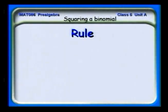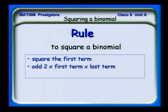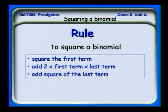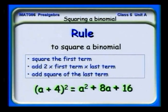Here's the rule for squaring a binomial: square the first term, then add twice the first times the last term in the binomial, then add the square of the last term. For example, (a + 4) squared: square the first term to get a squared; the first times the last is 4a, doubled gives 8a; then square the last term to get 16. Result: a squared + 8a + 16.